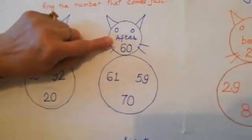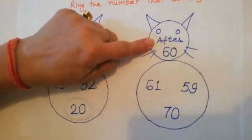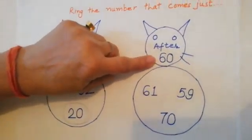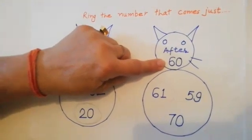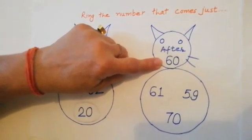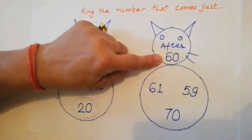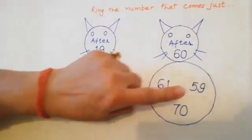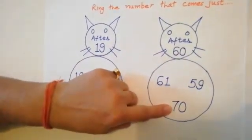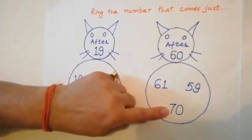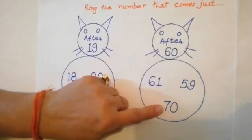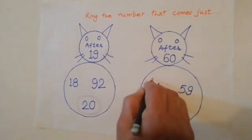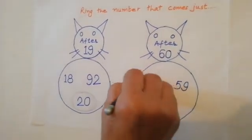Next is what's written here? After. And which number is this? 60. What comes after 60? 61, 59, 70. What comes after 60? 61. We will ring this number.